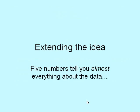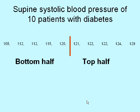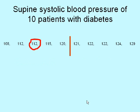Now we're going to extend the idea. The five numbers are the maximum, the minimum, the median, and then two new kinds of number. Here's my data set again — my 10 patients. I've divided them into two halves: the bottom half and the top half, each with 5 results. The dividing line is the median. We can find the median of the bottom half: 5 plus 1 is 6, divide by 2 is 3, so it's the third number. We can also find the median of the top half — same principle, the third number on the top half.